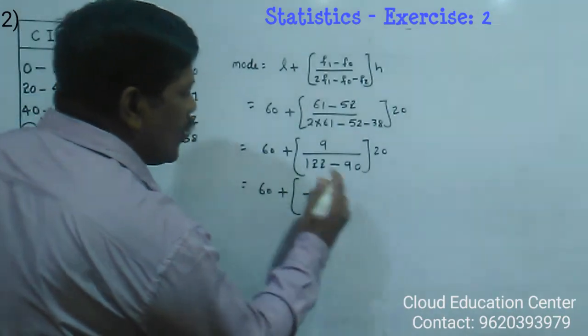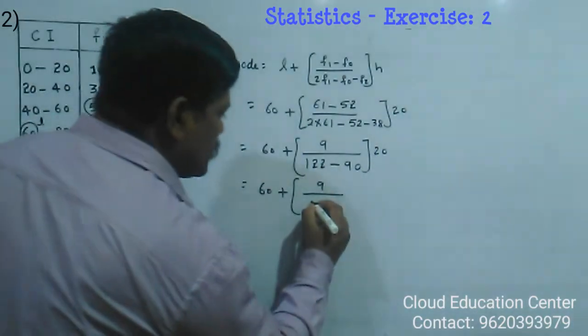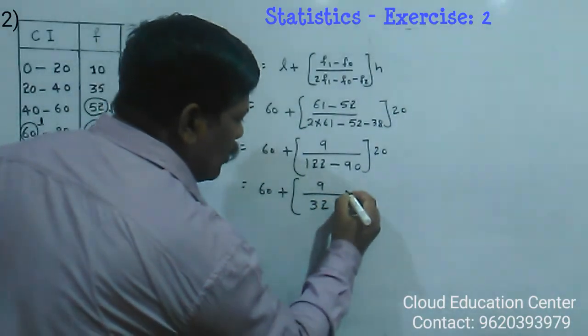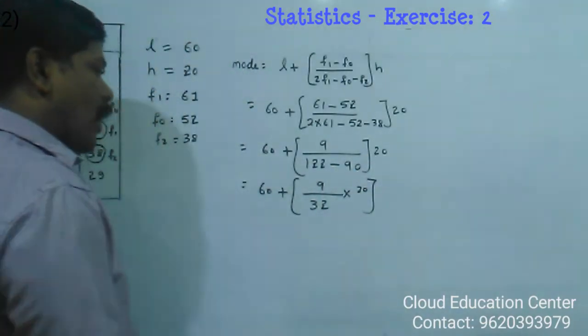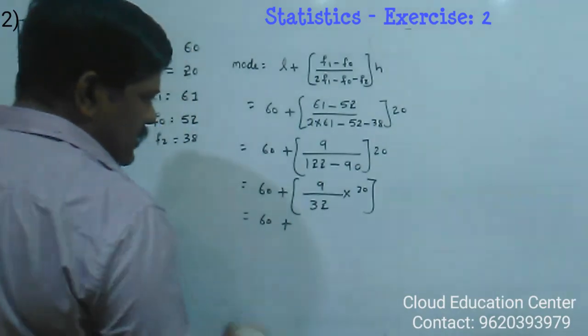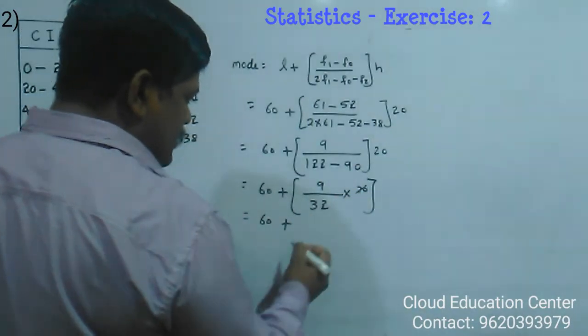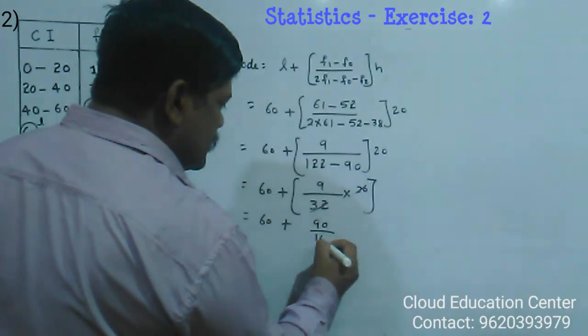9 by 122 minus 90 is 32 into 20. So 60 plus 90 by 16.